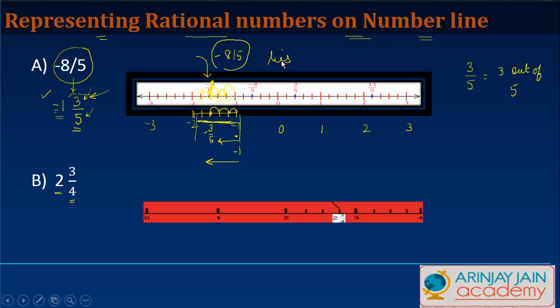Now this one was a little difficult in the sense that you don't get daily the negative numbers. Let's look at the second one. The second one says 2, 3 by 4. Now 2 is positive so I don't need to draw this negative number line. I simply point out 0 here, 1, 2, 3, 4.